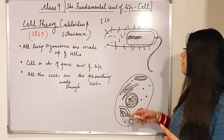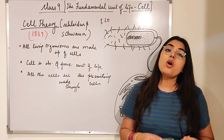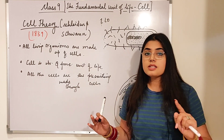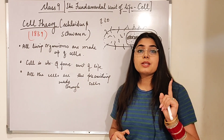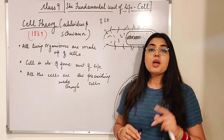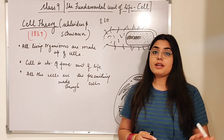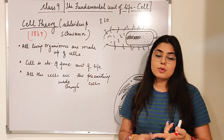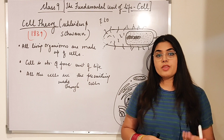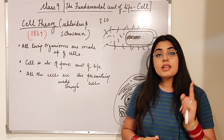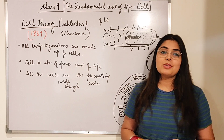In the next video we will be moving forward to the different types of cells — unicellular and multicellular — on the basis of their number. We will also cover eukaryotes, prokaryotes, and differences between plant and animal cells. So stay tuned, don't forget to like, share, and subscribe. I will see you guys in the next video — take care!